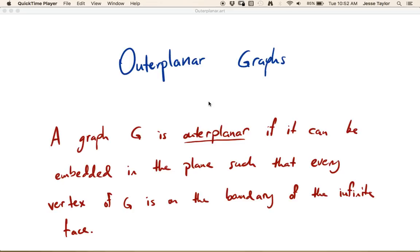In this video I want to describe a class of graphs called outer planar graphs. An outer planar graph, so a graph G is outer planar if and only if it can be embedded in the plane. Remember, embedding means that none of the edges cross, embedded in the plane such that every vertex is on the boundary of the infinite face.